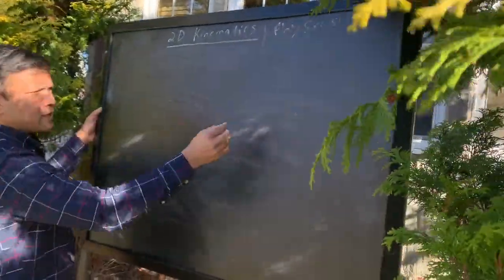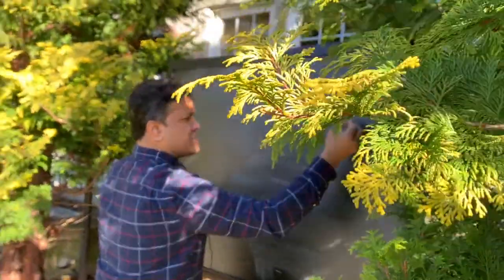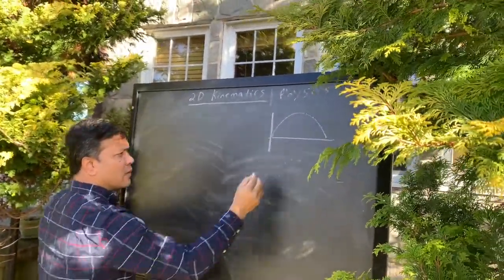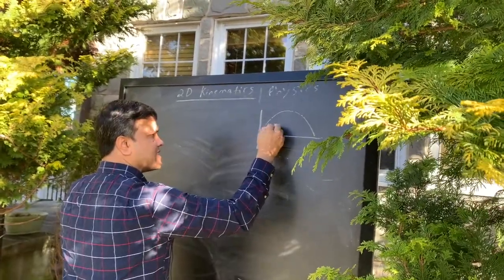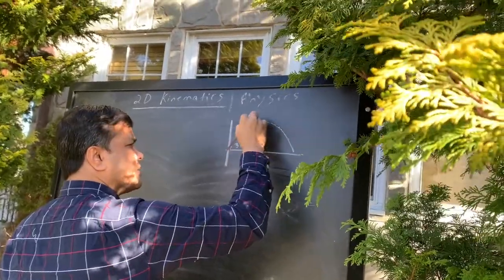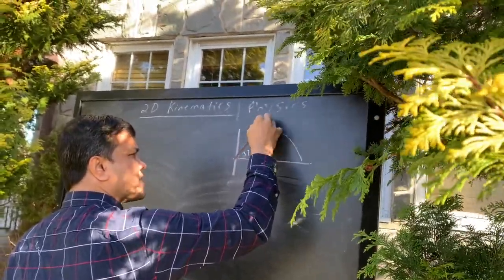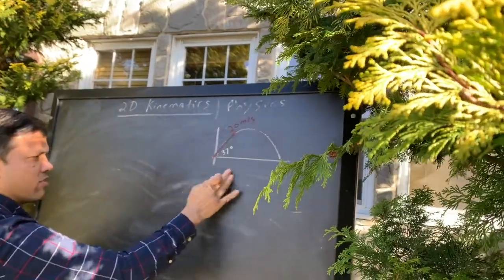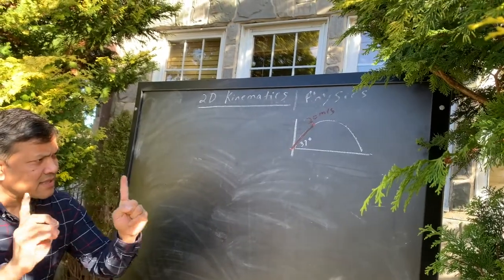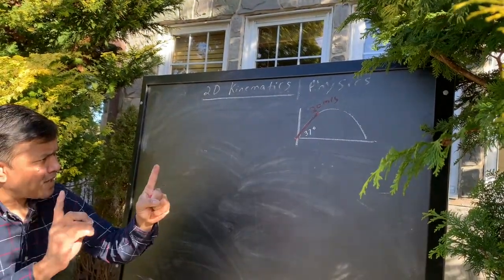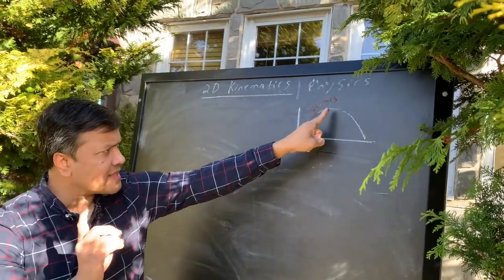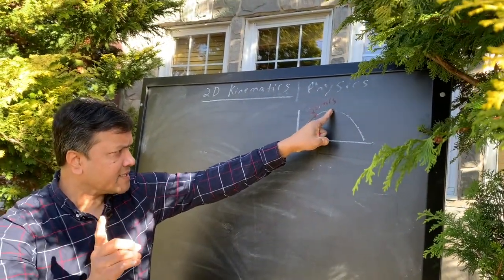So what am I talking about? Let's write down the problem. As you know, Maradona kicked the ball with a 37 degree angle and with 20 meters per second. We want to find the shortest distance between Maradona's foot and the highest maximum height.